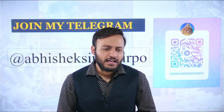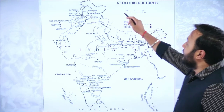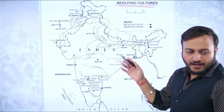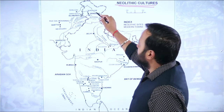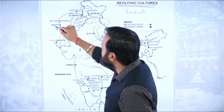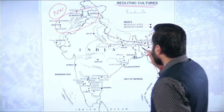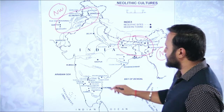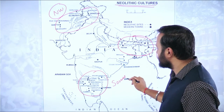Let us understand the first thing about the Neolithic age — Neolithic culture and its locations in India. Have a look at this map. You will realize that Neolithic culture was primarily present in the northwestern corridors, the northeastern corridors, and in the southern corridors of India.